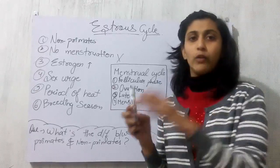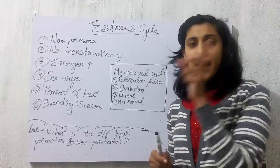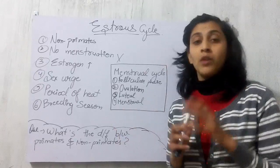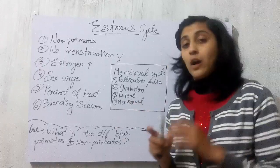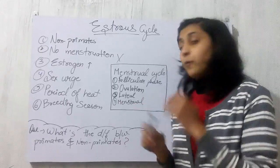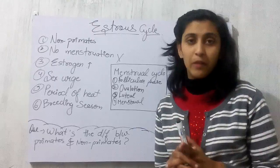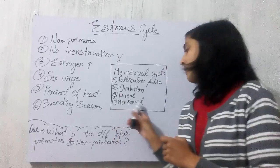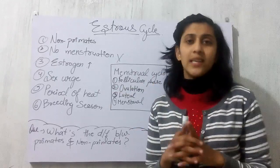As soon as the follicle matures into the Graafian follicle, the LH hormone will increase suddenly. This LH surge marks the luteal phase, and ovulation will occur — the ovum is released. If it is fertilized, the lady will become pregnant. If it is not fertilized, after a maximum of about 24 hours, the lady will undergo the menstrual or bleeding phase.